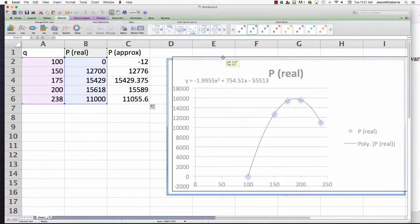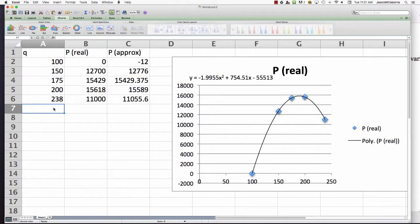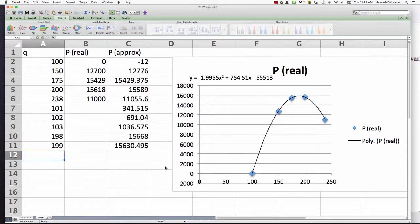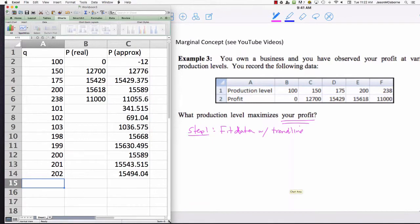Now the reason why we want to have this formula is because we can now do things like what's 100 and at a production level of 101, how about 102, how about 103? And then you can start to make some observations here about what happens with your profit as you're getting nearer to, let's say, 198, 199, 200. The point of this video is to draw a conclusion about what's important about the marginal profit, or the marginal concept. So we first fit data with a trend line.